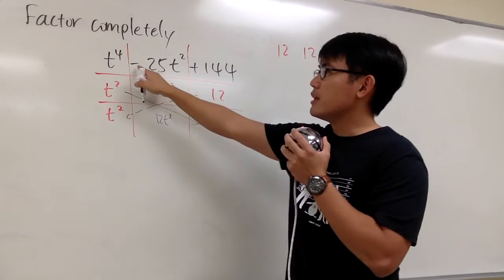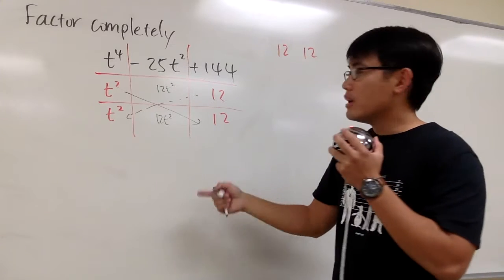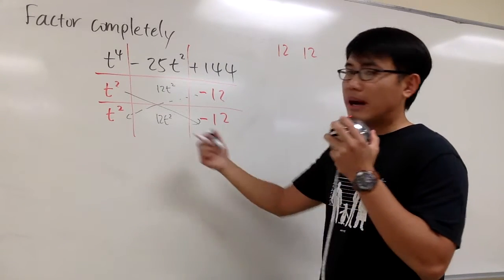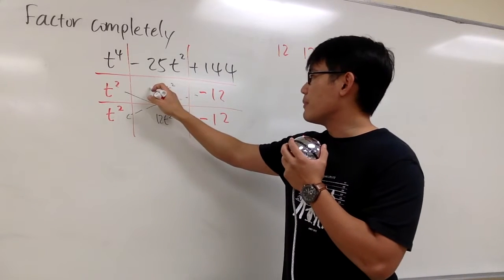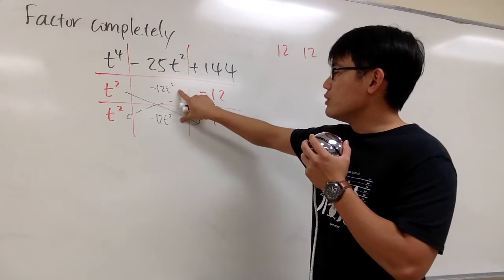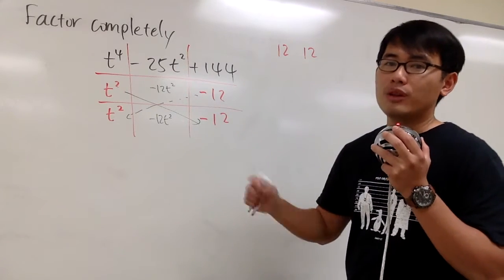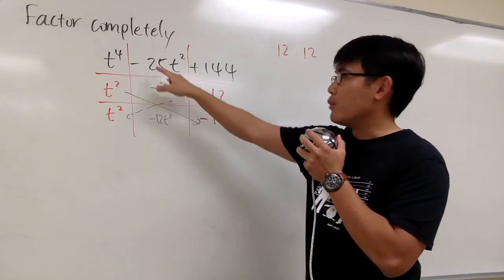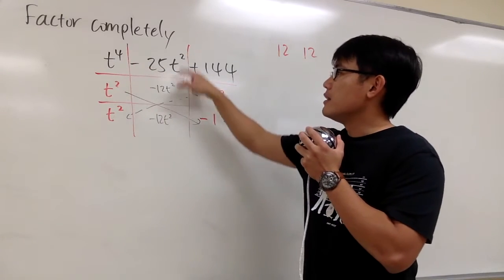First, I have a trouble because I need to have a negative number right here. So technically, I should have chosen both of them being negative. But in this case, I will just end up negative 12t squared, negative 12t squared. These two together will give us negative 24. So that's not the right combination because I want to end up negative 25t squared.